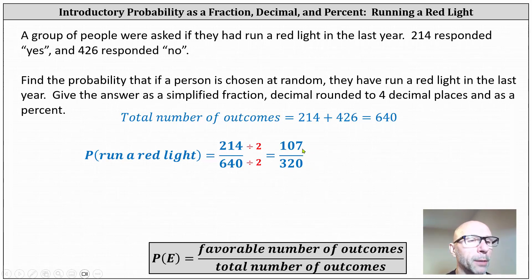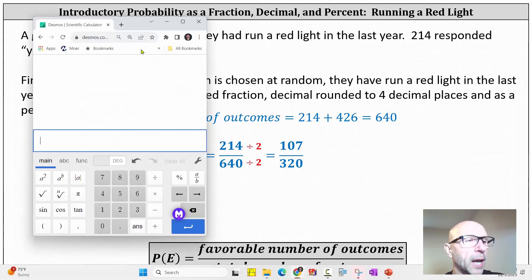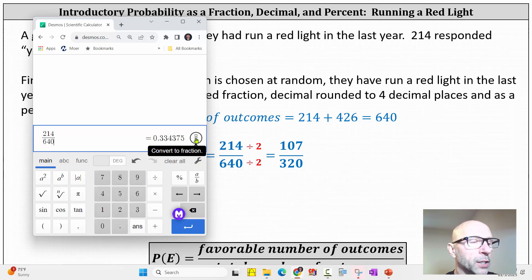107 happens to be a prime number. Now to convert to a decimal, we divide 107 by 320. Using the Desmos Scientific Calculator, if we enter the original fraction of 214 divided by 640, we can click on the Convert to Fraction button, which gives us the simplified fraction.